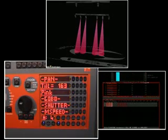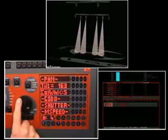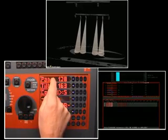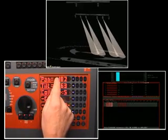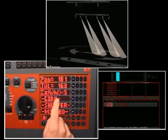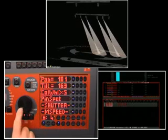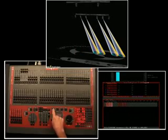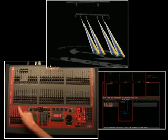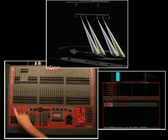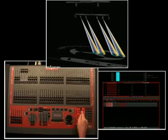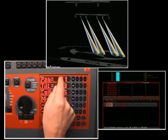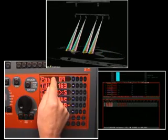Now let's alter some parameters and record the look in Page 1, Scene 2. This looks good, so record it by pressing Record Red 2. Let's make another look and record it in Red Page 2, Scene 5.